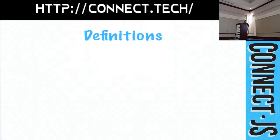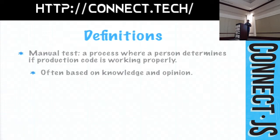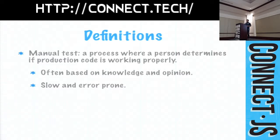Before we go further, we need to get a few things straight. As developers, we like to have definitions. For purposes of this talk, manual testing is a process where a human has to be involved — some person has to look at the results. This is an issue because how well the test happens depends on what they know and their opinions, as well as them being detail-oriented. It's slower and error-prone. If you're tired, stressed, or in a hurry, you're going to miss things. So manual testing, while useful, is slow and error-prone.